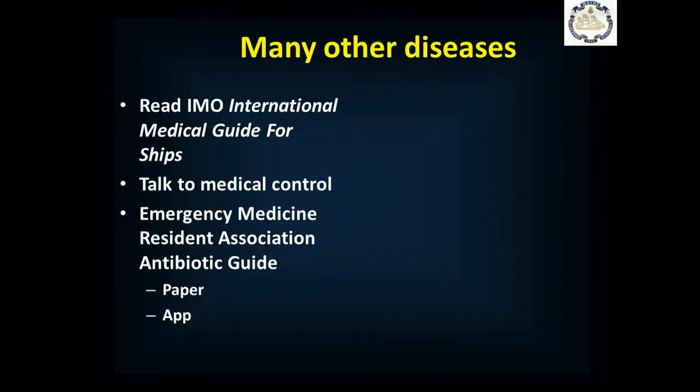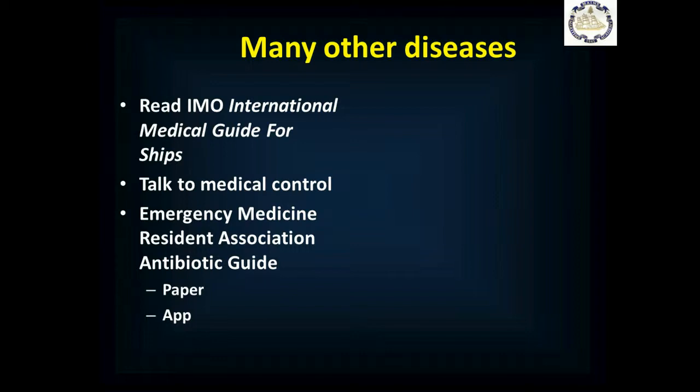There are many other infectious diseases — read your textbook, the International Medical Guide for Ships, and other references. The Emergency Medicine Resident Association of the American College of Emergency Physicians has an antibiotic guide available as a paper version or app, providing excellent information on diseases, common organisms, and best treatment options. The Five Minute Clinical Consultant is also very helpful. Make sure you have other references available. Please complete any knowledge reviews or assessments associated with this presentation, and if you have questions, contact your instructor or professor. Thank you very much.